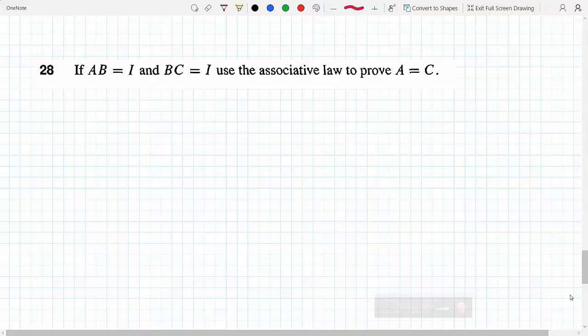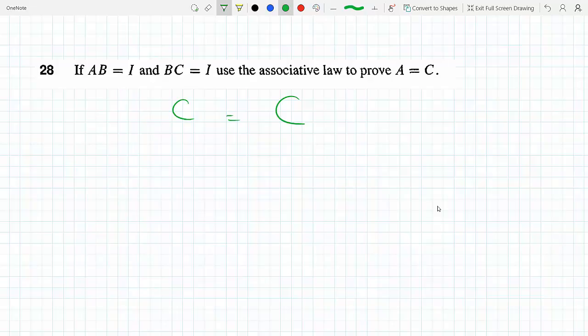If AB equals I and BC equals I, use the associative law to prove A equals C. We can say that matrix C equals matrix C, and multiplying by an identity matrix doesn't change anything.